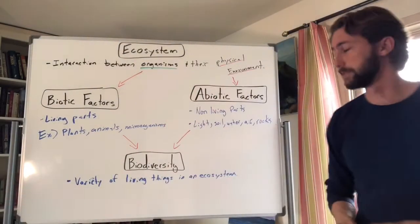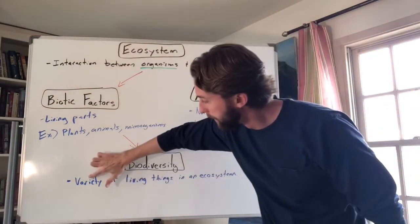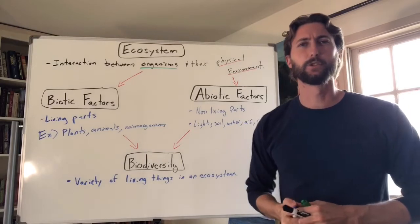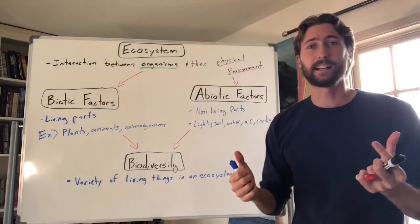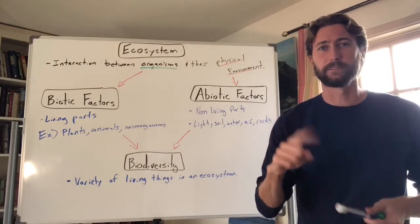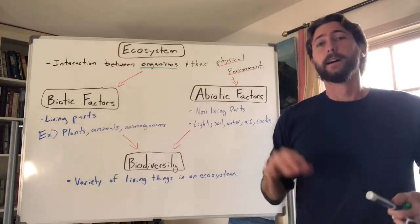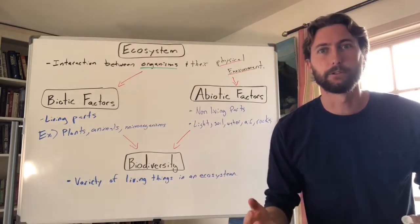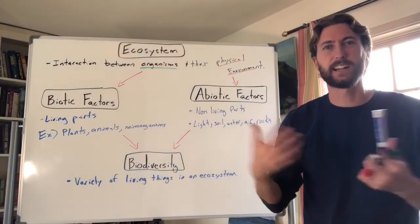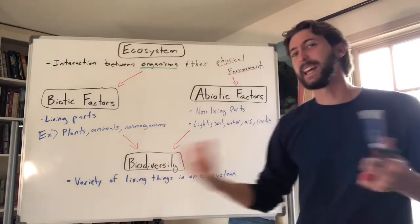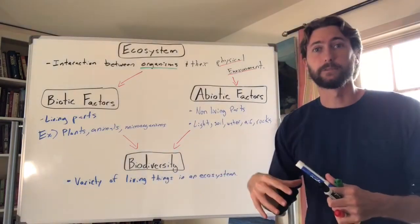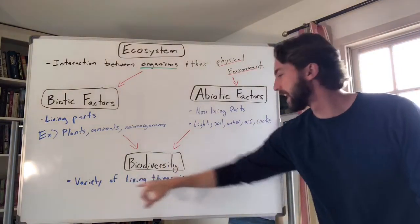Here's an example: in a classroom of 30 students, the biodiversity is pretty low because there's only one type of life — human beings. Unless you count bacteria hanging around the room! To increase biodiversity, you could bring in plants, animals, cats, dogs — different types of life. That increases the variety of types in an ecosystem.